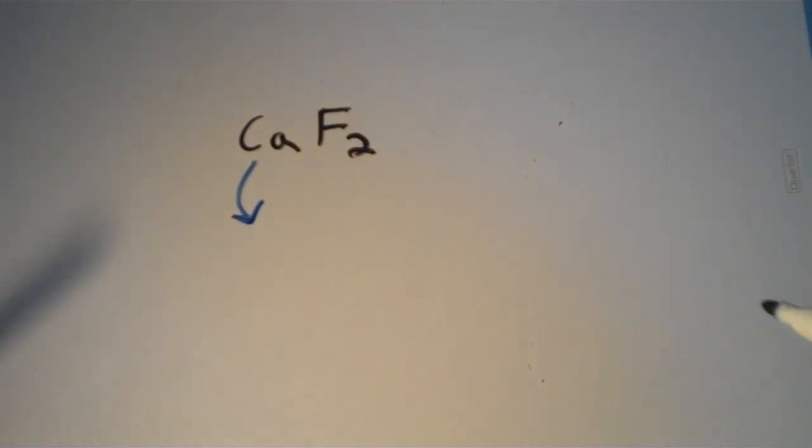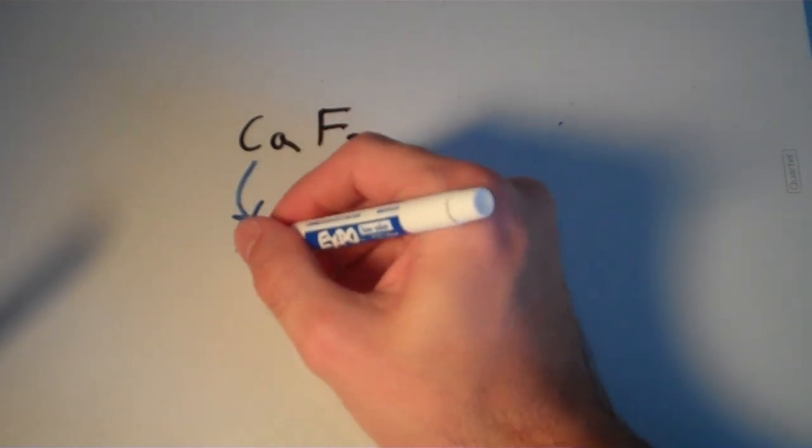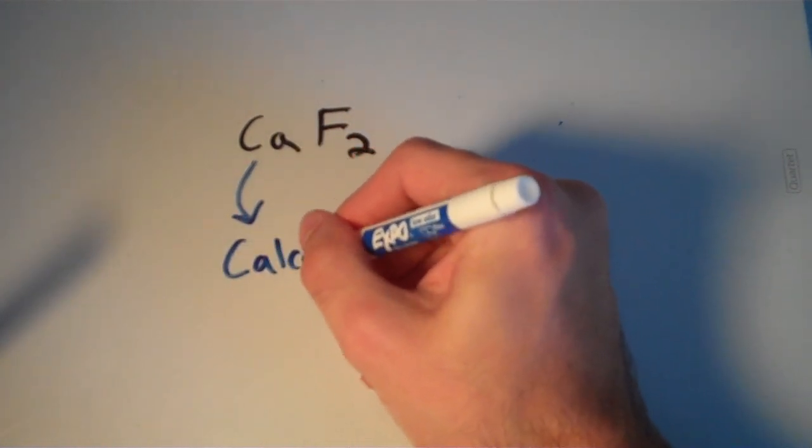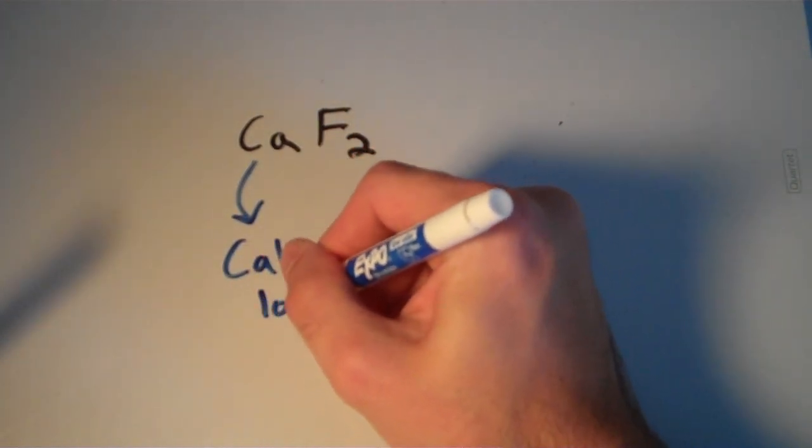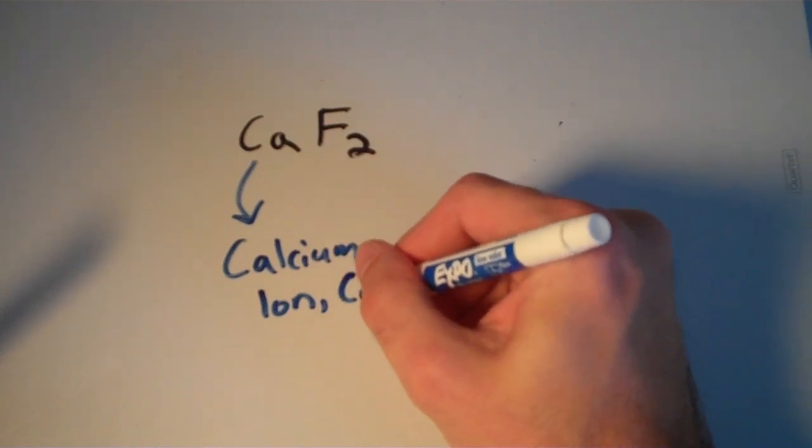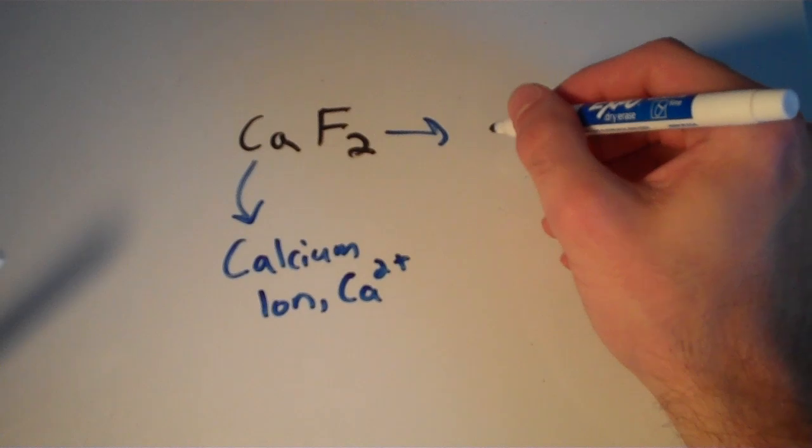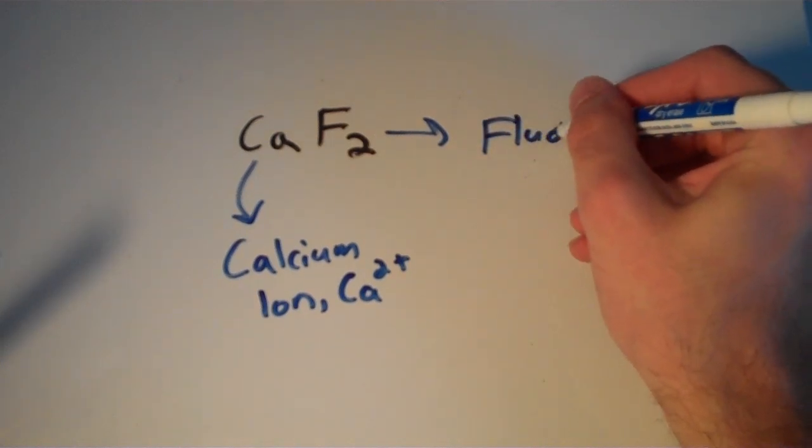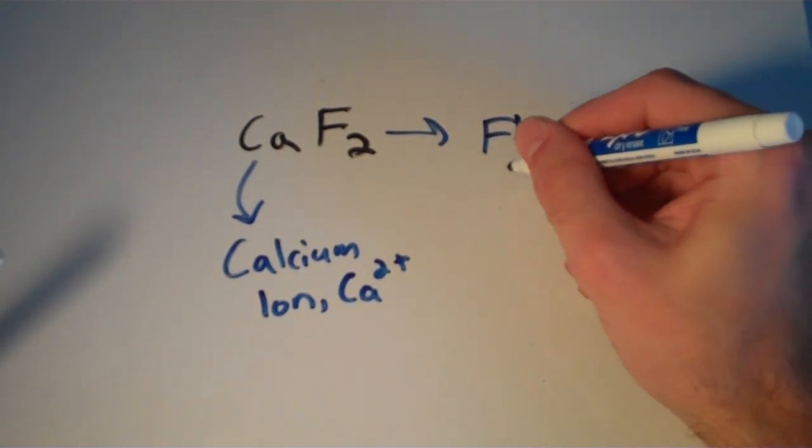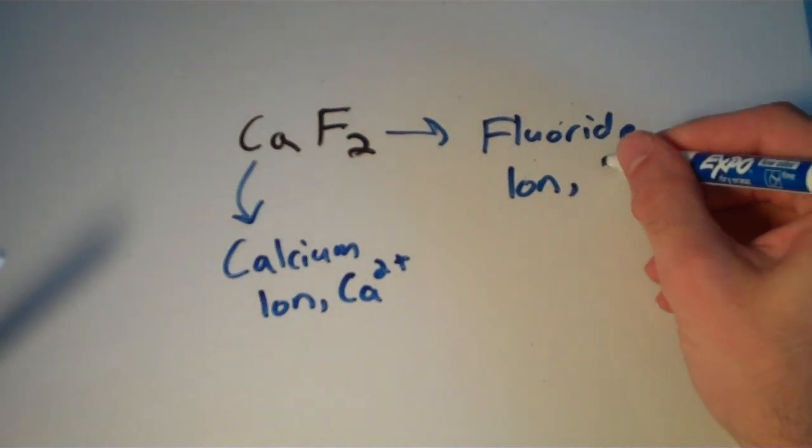CaF2. Our cation is the calcium ion, which is Ca2+. And our anion is the fluoride ion, or F-.